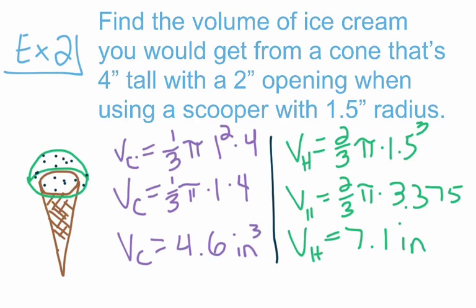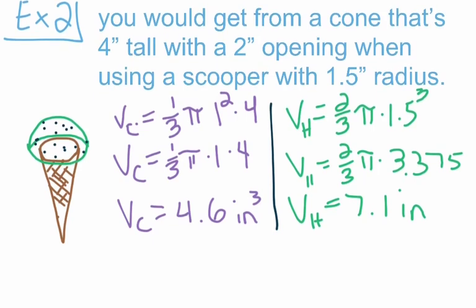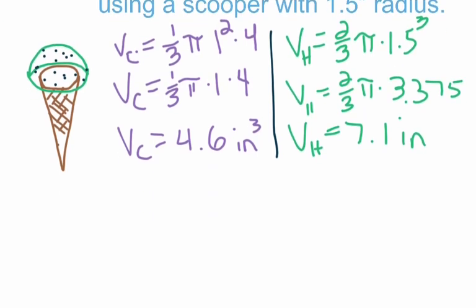So we've got our volume of the cone at 4.6 cubic inches and the volume of the hemisphere sitting on top at 7.1 cubic inches. When we add those together, we get a total volume equal to 11.7 cubic inches of ice cream. That's 11.7 cubic inches of ice cream in your cone.